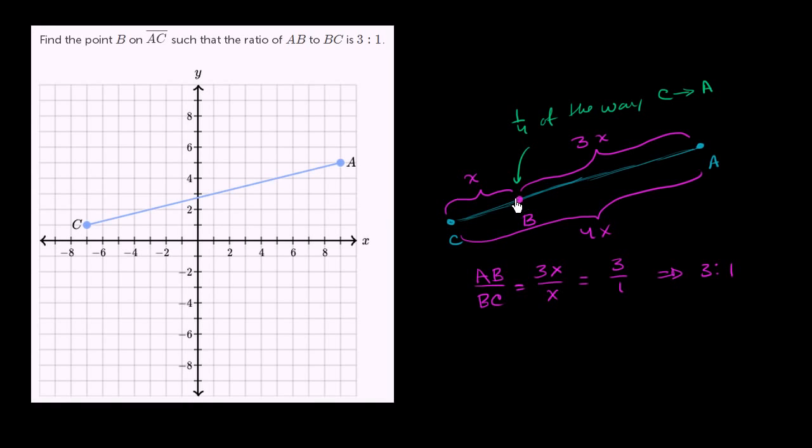But that makes it complicated because this line is at an incline. It's not just horizontal, it's not just vertical. What we can do, however, is break this problem down into the vertical change between A and C and the horizontal change between A and C.